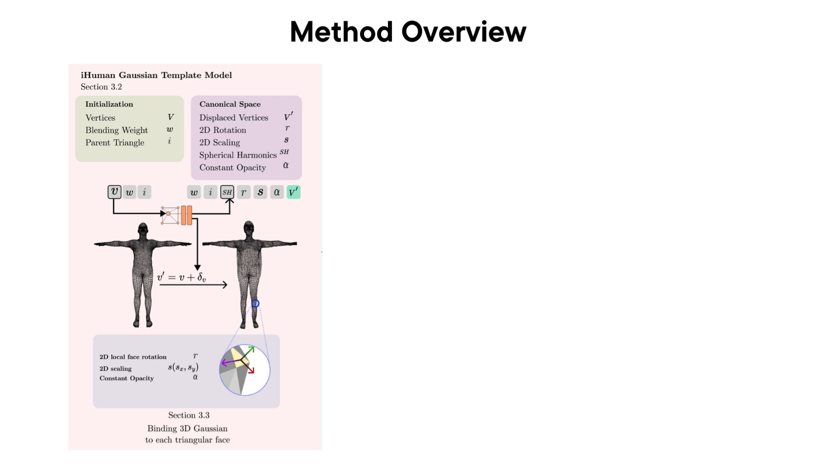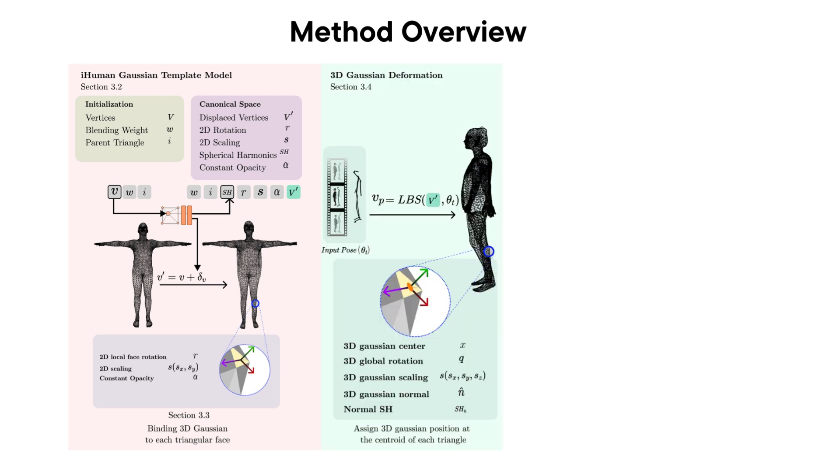Our method represents the human body in canonical space. It uses a template body model with vertices and triangles and adds displacement to model both personalized shape and clothing. Given an input pose, we apply forward blend skinning to deform the mesh in pose space.